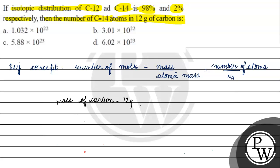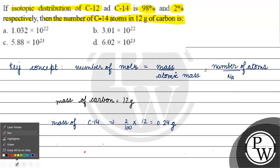Mass of carbon is given to us as 12 grams. This 12 grams, which is 2%, will give us mass of C-14. Mass of C-14 will be equals to 2% of 12, meaning 0.24 grams.